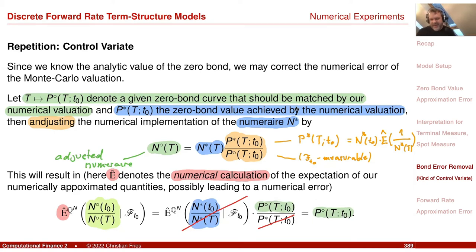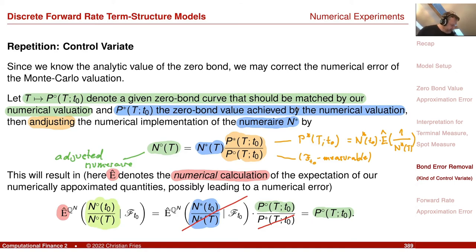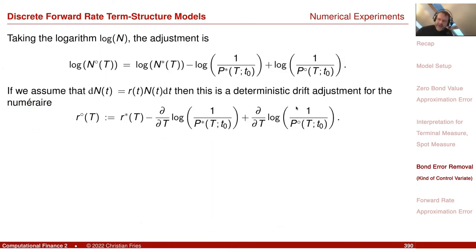That really looks brutal — I completely remove the full numerical valuation and get the right result. It's a brutal way of fixing any numerical error, and you have to be careful because it makes the error invisible. Other quantities might get larger errors through this without being immediately visible. So we have to check: does this alter the forward rates, the value of caplets, other financial products? We will see in a few minutes that this is a harmless correction.